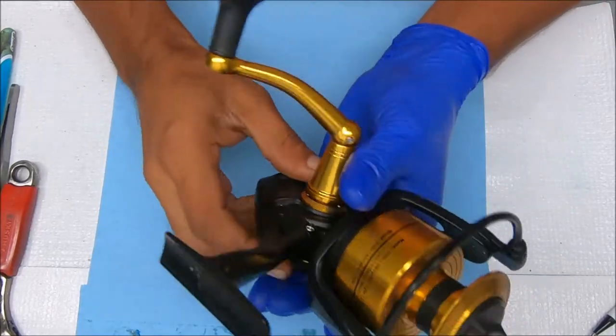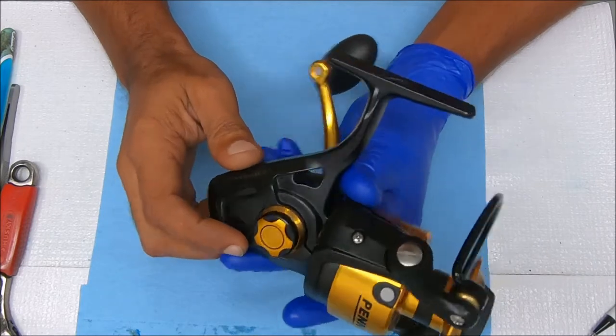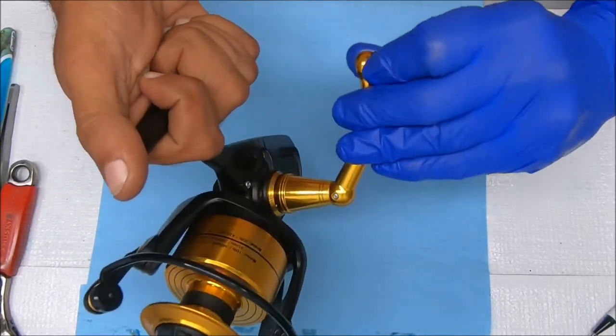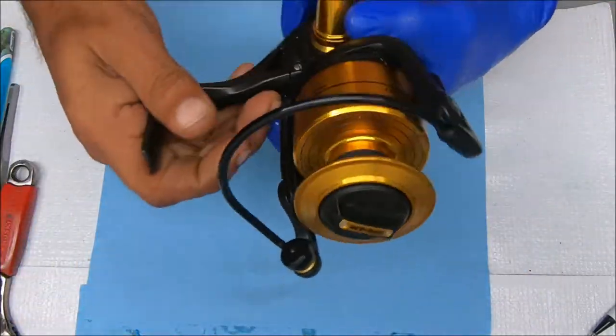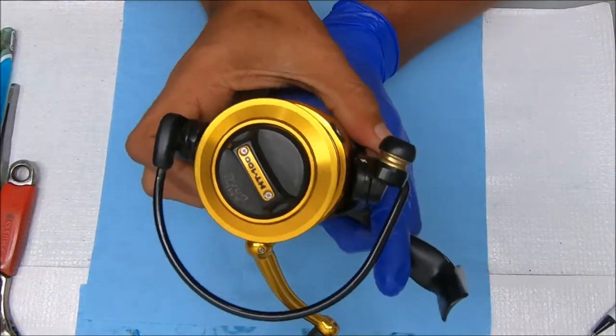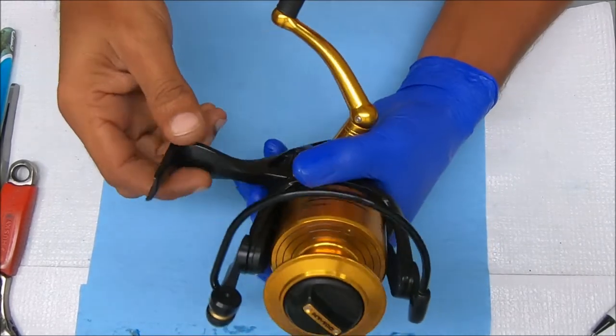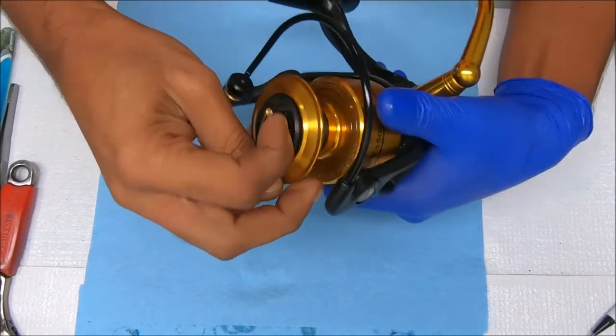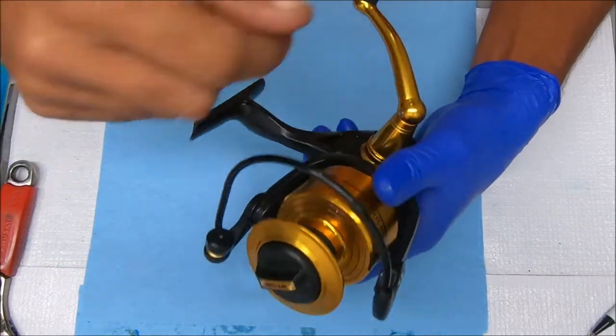Hey, today we have a Penn 5500 SSV and it is stuck. It turns a little bit like this, but I don't want to turn too much because it's really stiff. Alright, so let's dive right into it. I'm gonna focus my attention up here somewhere and then we'll go from there.